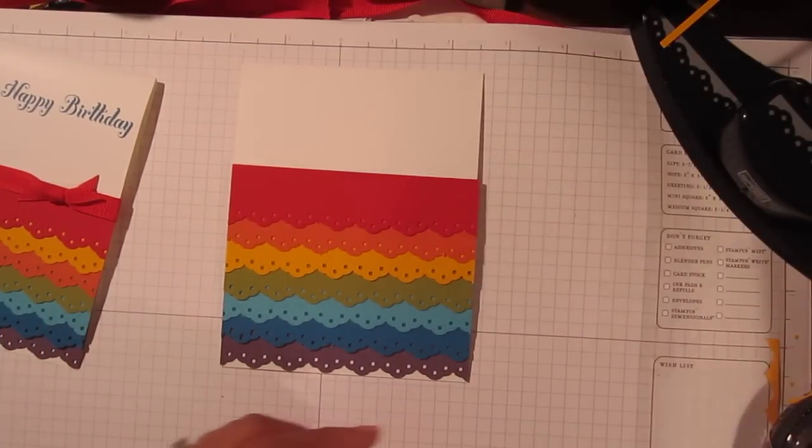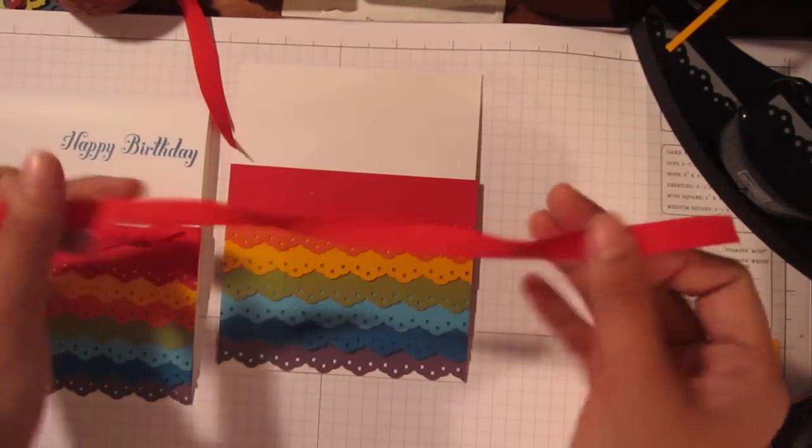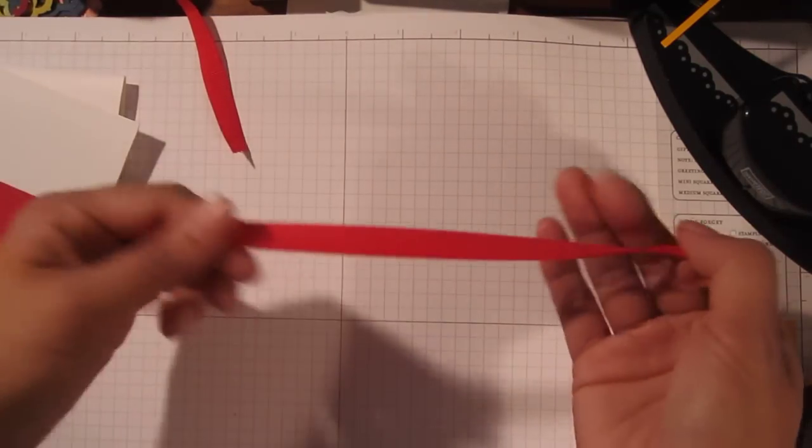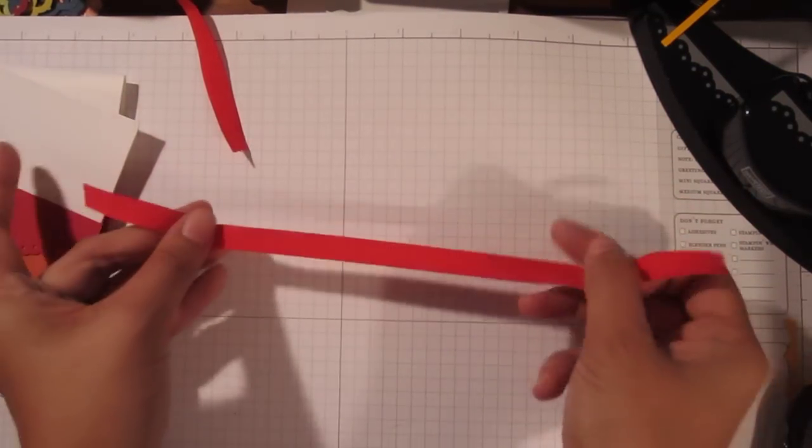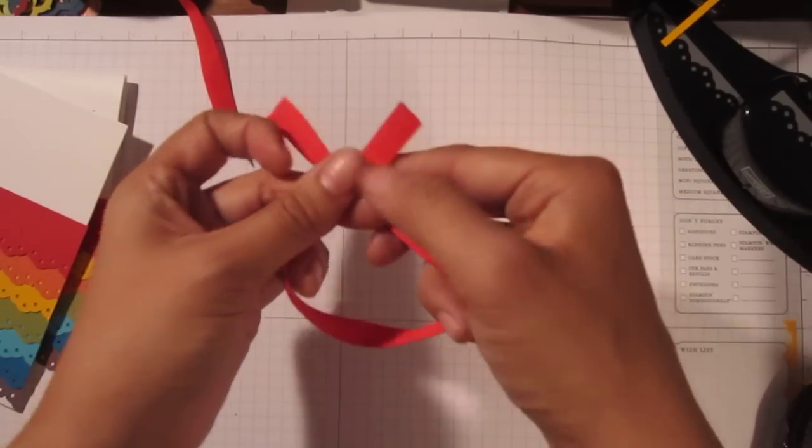Next for the bow. Now you're going to take a piece of ribbon. This is Real Red Gros Grain Ribbon. And what you do is, let me move this over so you can really see it. You're going to start to tie your knot. Just a regular, make sure your ribbon's flat. Just start to tie.